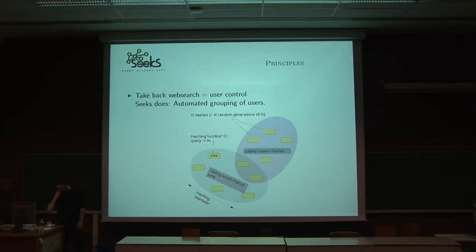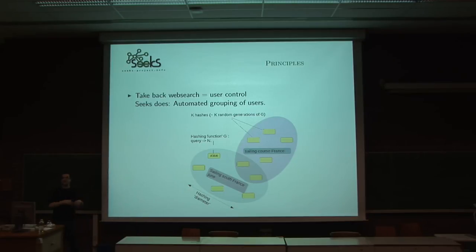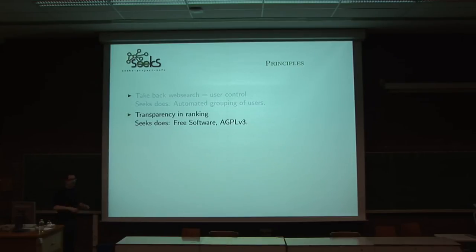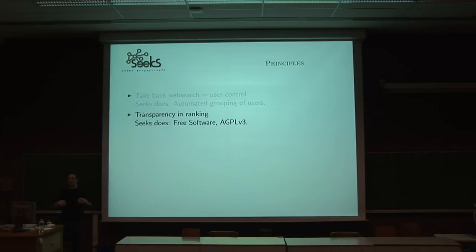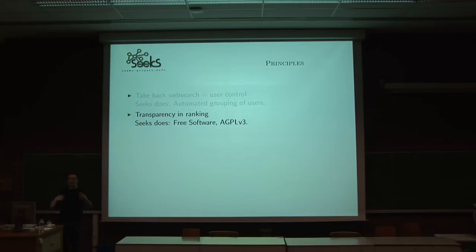Six builds on a few principles. The first one is: if you want to take back web search, you've got to give more control to users over the search algorithms. What Six does is regroup people so they're together, and once they're together, they can work together and have more control over their results and the algorithms. The second thing is transparency — meaning you're able to modify the equations, the ranking, the way ranking is done in the engine freely. You do not have to rely on proprietary code and equations to have your results ranked. Six is a free software, which lets you change the code as you want, and this does not impact other users.